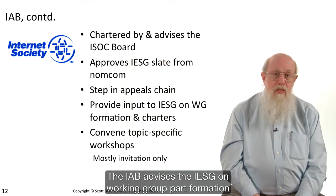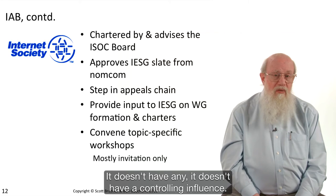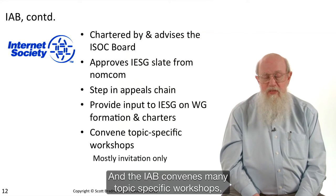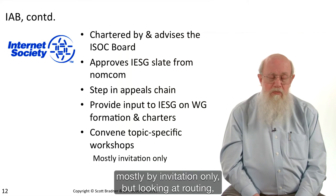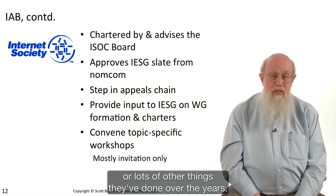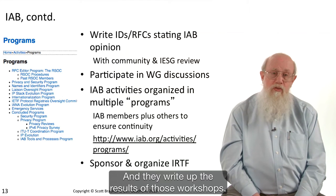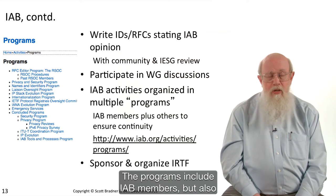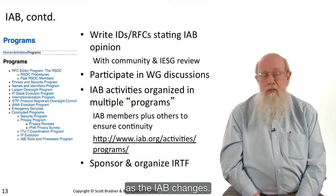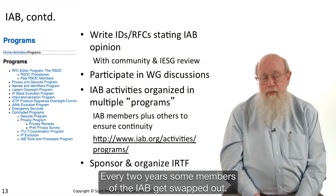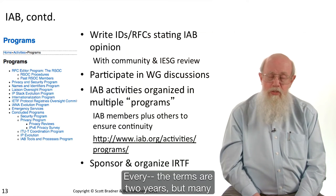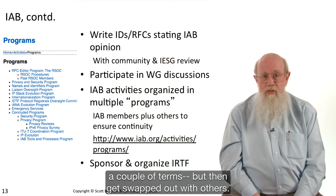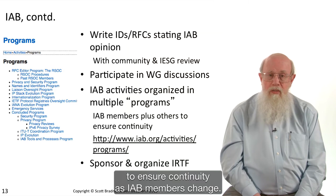The IAB advises the IESG on working group formation and working group charters. It doesn't have a controlling influence; it just advises. The IAB convenes many topic-specific workshops, mostly by invitation only, looking at routing, the future of routing, security, mobility, and other things, and they write up the results. IAB activities are generally organized into programs that include both IAB members and non-IAB members, to ensure continuity as the IAB changes. Every two years some IAB members get swapped out, so programs are set up to maintain continuity.